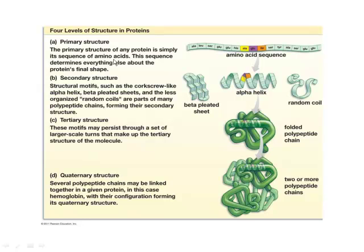Let's briefly talk about these proteins using this diagram. First level, the primary structure. I see a bunch of boxes joined together here with little three-letter abbreviations — each one of these little boxes represents a particular amino acid. The first thing that must be right about a protein is it must have the correct amino acid sequence. There are twenty different amino acids, and they are not in just any order — they're in a certain exact order for a particular protein. Exactly so many amino acids, and exactly certain ones in certain positions.